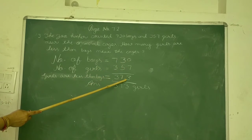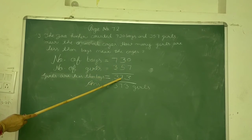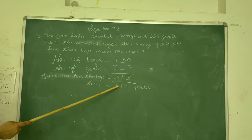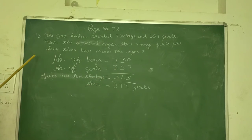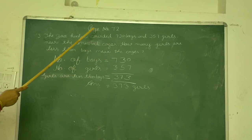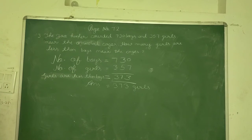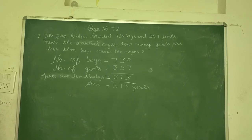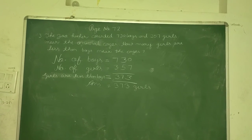The number of boys is 750 and 357 girls. So, 750 minus 357. 10 minus 7 is 3, 14 minus 5 is 9, wait, let me recalculate: 373 girls are less than boys. You can write this statement in your notebook and write it. Thank you.